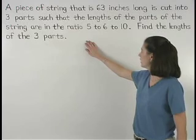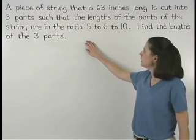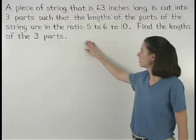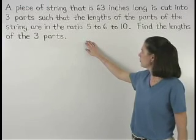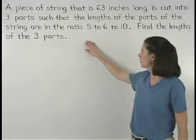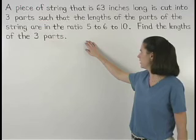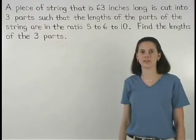A piece of string that is 63 inches long is cut into three parts such that the lengths of the parts of the string are in the ratio 5 to 6 to 10. Find the lengths of the three parts.